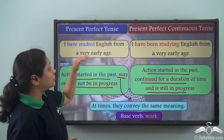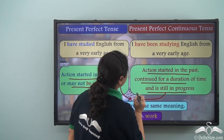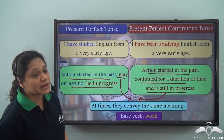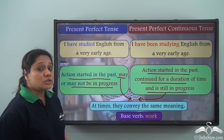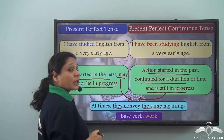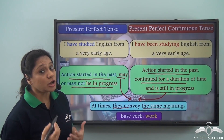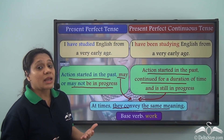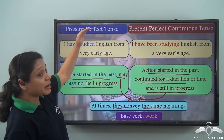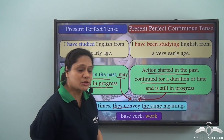Since there is a 'maybe' in case of the present perfect tense and 'still in progress' in case of the present perfect continuous tense, they essentially give us the same meaning at times. It depends how you use them in your sentence and what you are trying to say. Some verbs convey the same meaning in the present perfect tense as well as in the present perfect continuous tense.